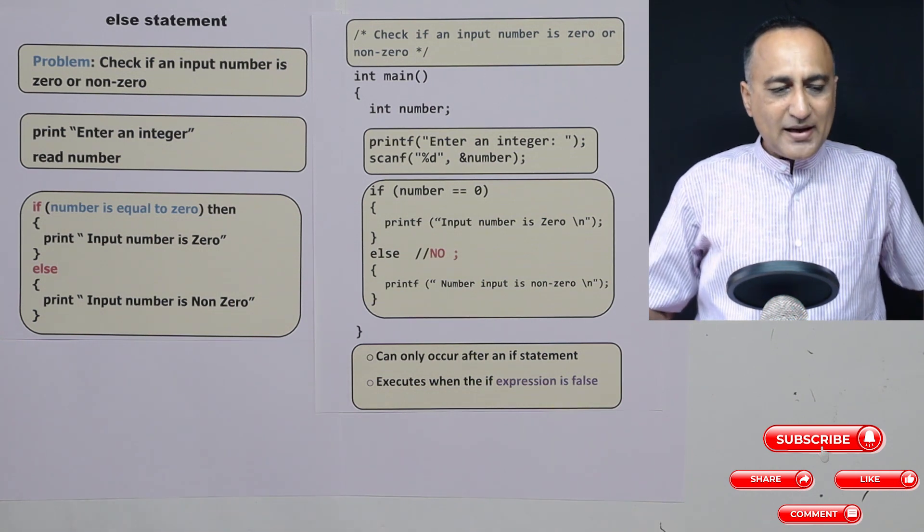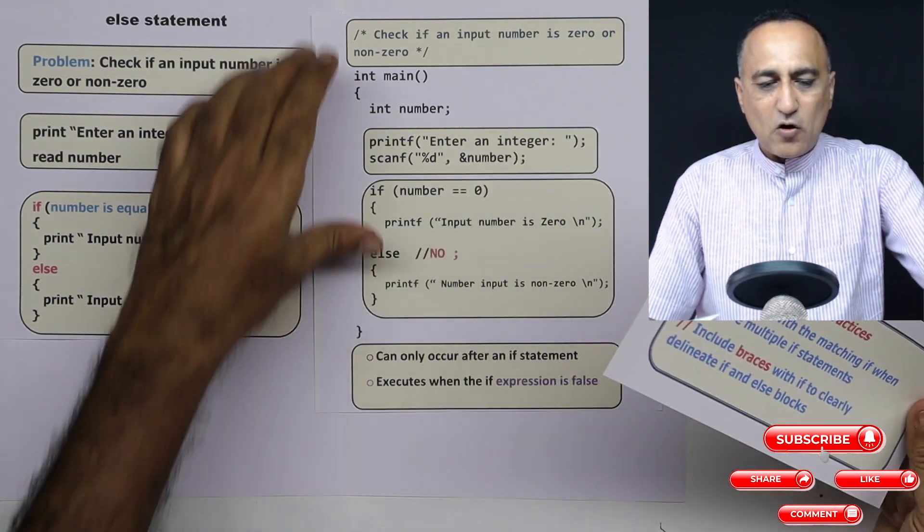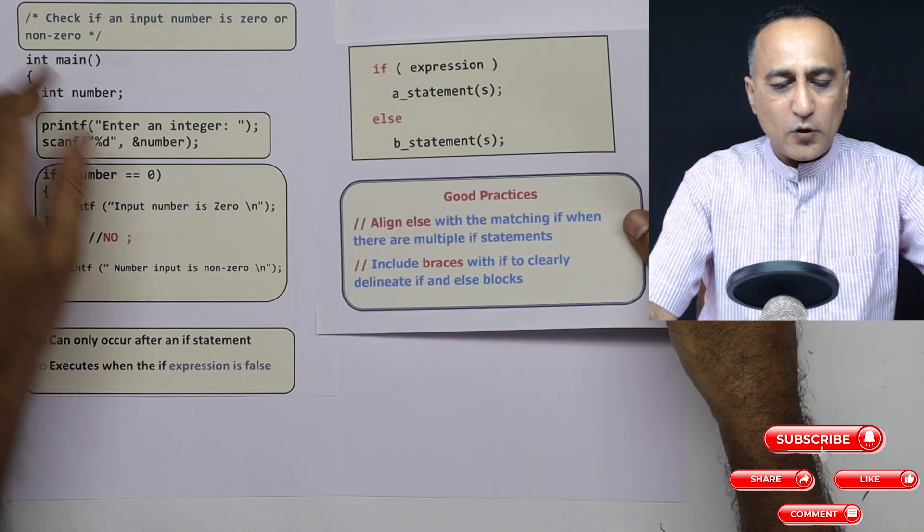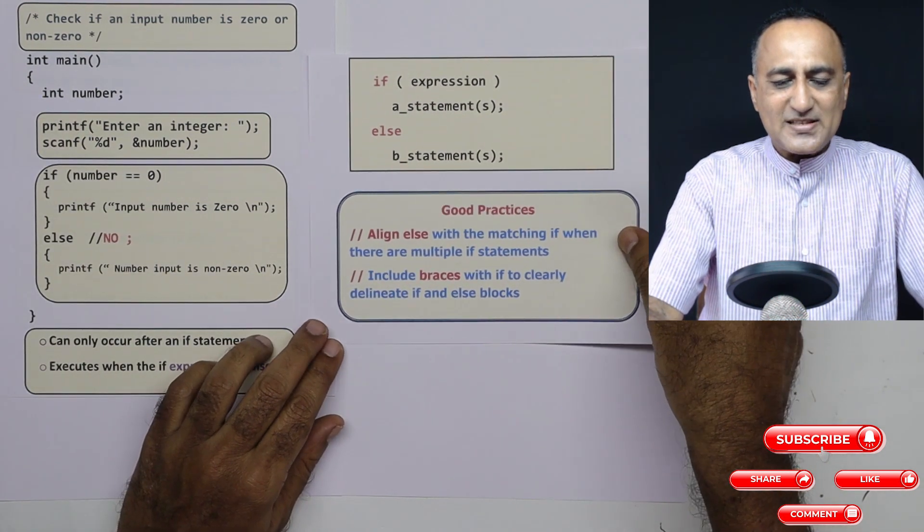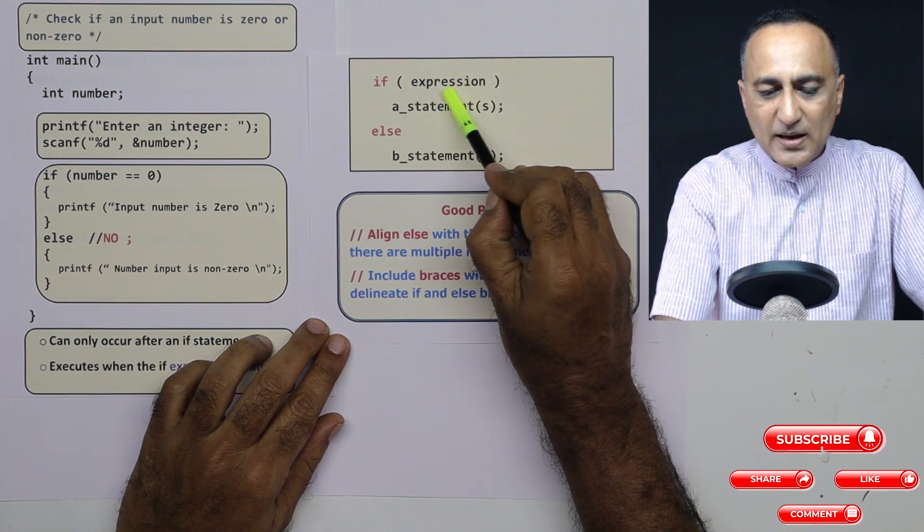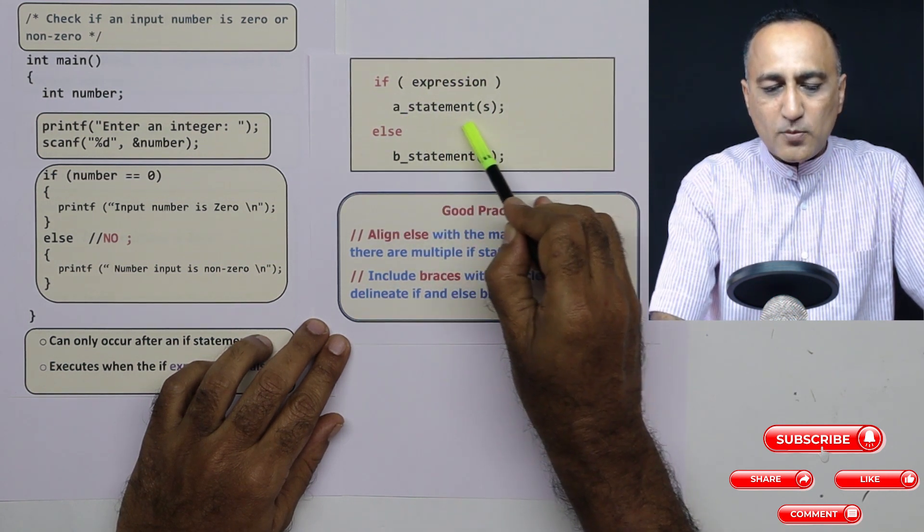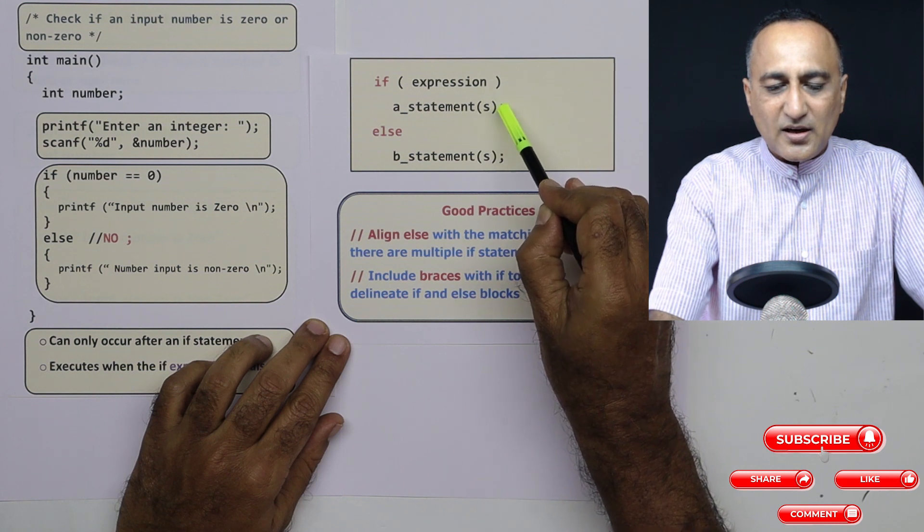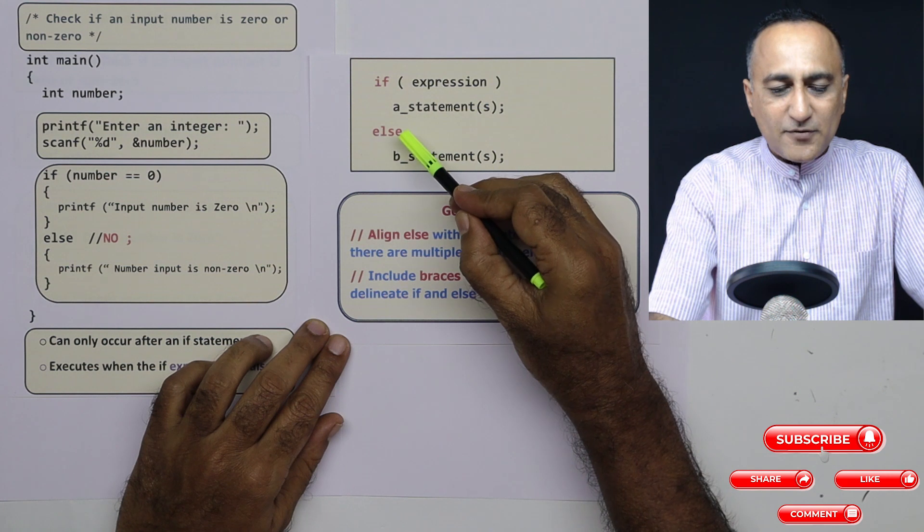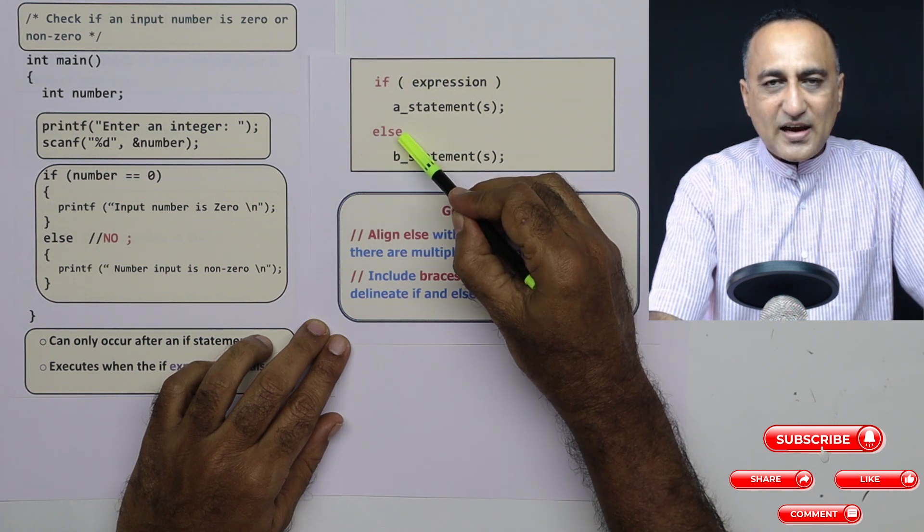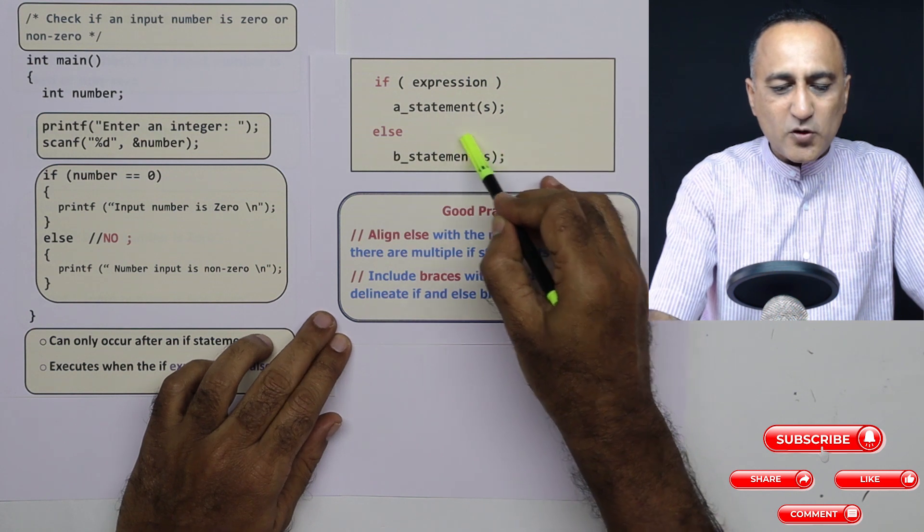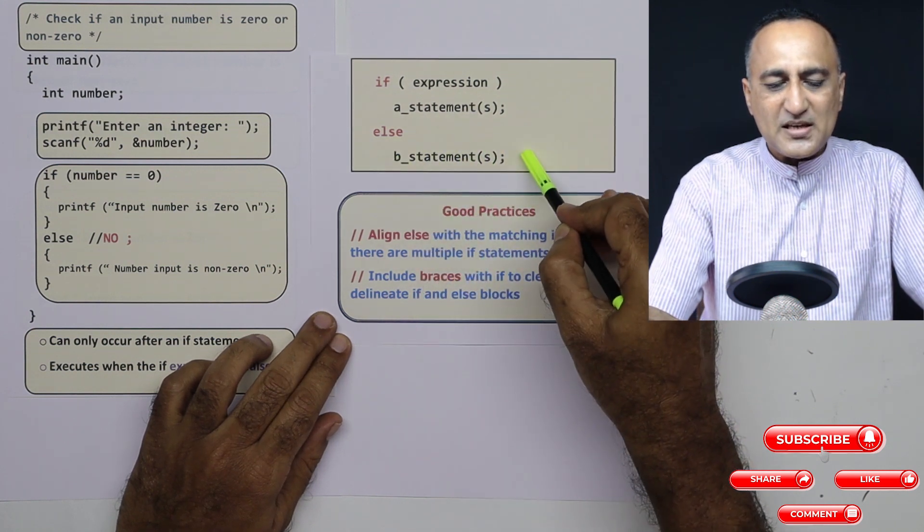Now if you need to take a look at the syntax of the if-else, this is how the if-else will look. So for the if-else, if the Boolean expression happens to be true, then zero or more statements related to this if condition will be executed. If the else happens to be true - in the sense if the if is false - then it will execute zero or more of these b statements.